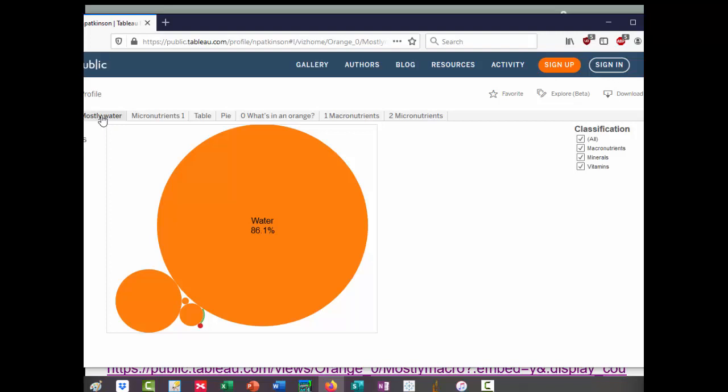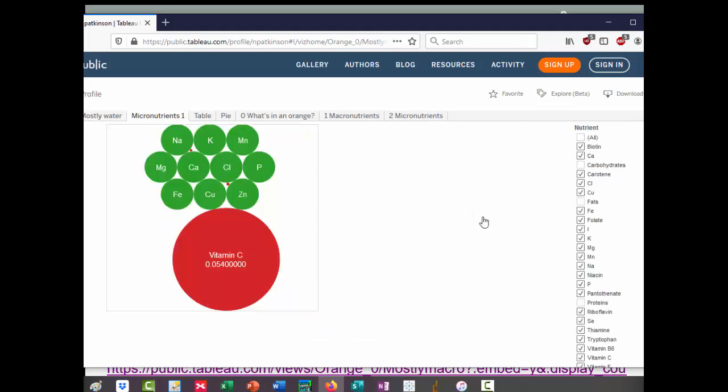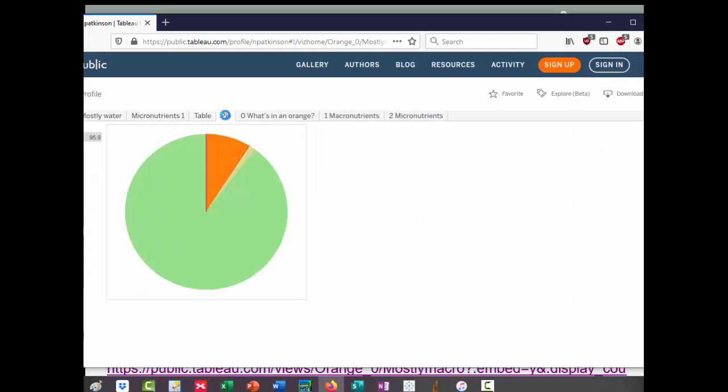We can take away the water, just leaving the micronutrients, and vitamin C massively predominates here with the minerals being in quite big amounts. Almost buried are things like carotenes and folates. It's also available as a table and a pie chart.